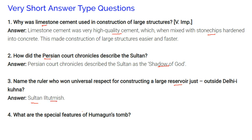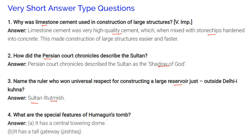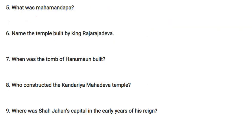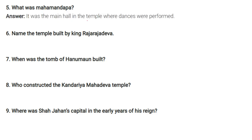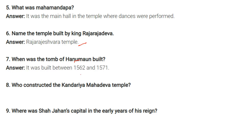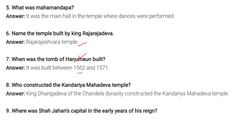Question: What are the special features of Humayun's dome? Humayun's tomb has a central towering dome and a tall gateway called Pishtak. Question: What was Mahamandapa? It was the main hall in the temple where dances were performed. Question: Name the temple built by King Rajarajadeva — the answer is the Rajarajeshwara temple. Question: When was Humayun's tomb built? It was built between 1562 and 1571. Question: Who constructed the Khandariya Mahadeva temple? King Dhangadeva of the Chandela dynasty constructed the Khandariya Mahadeva temple.